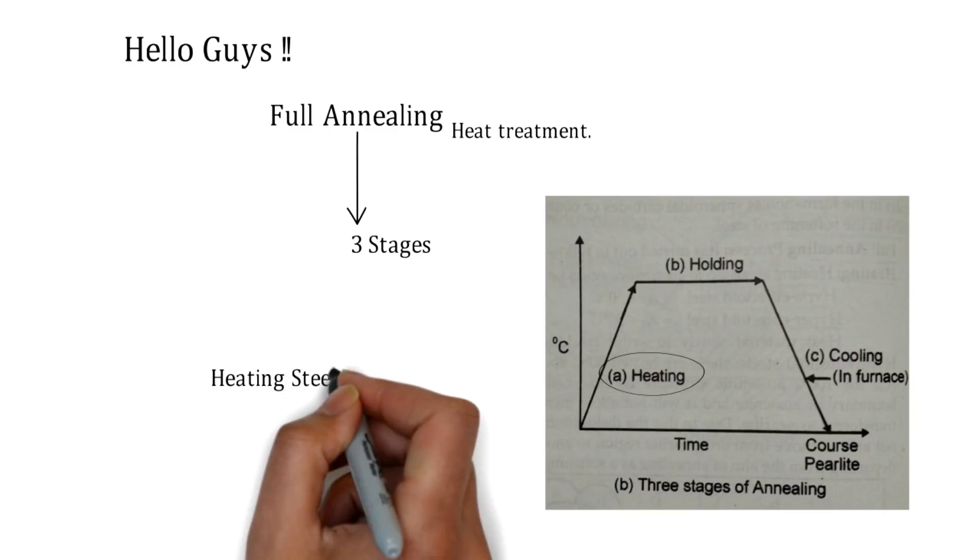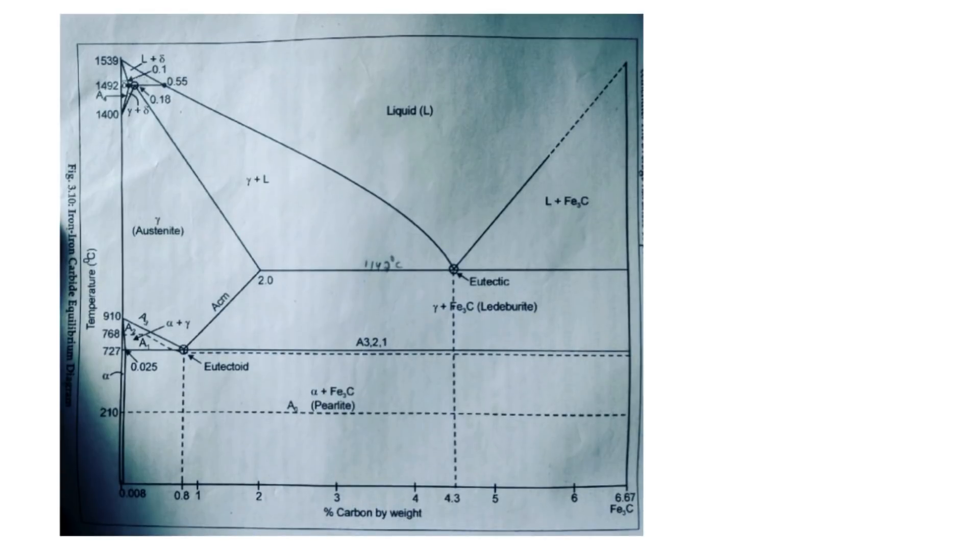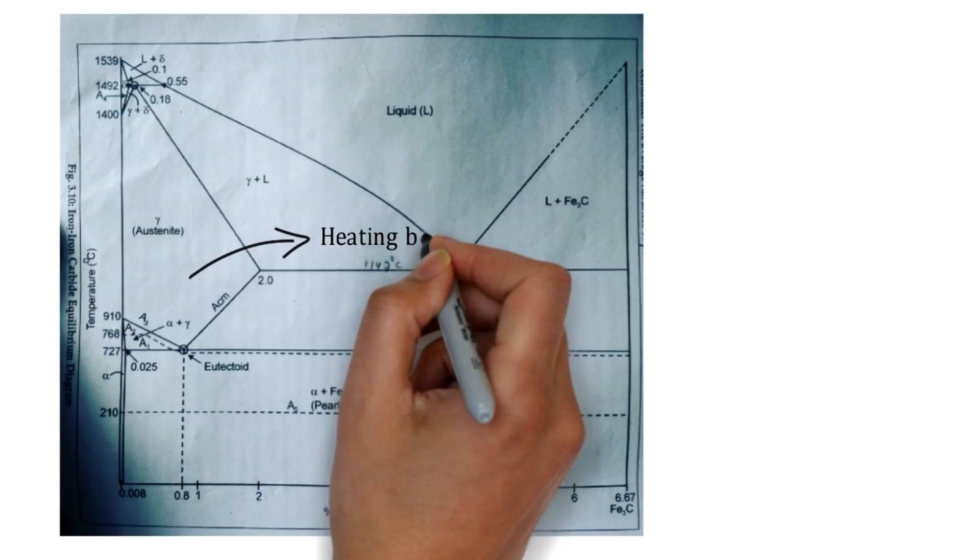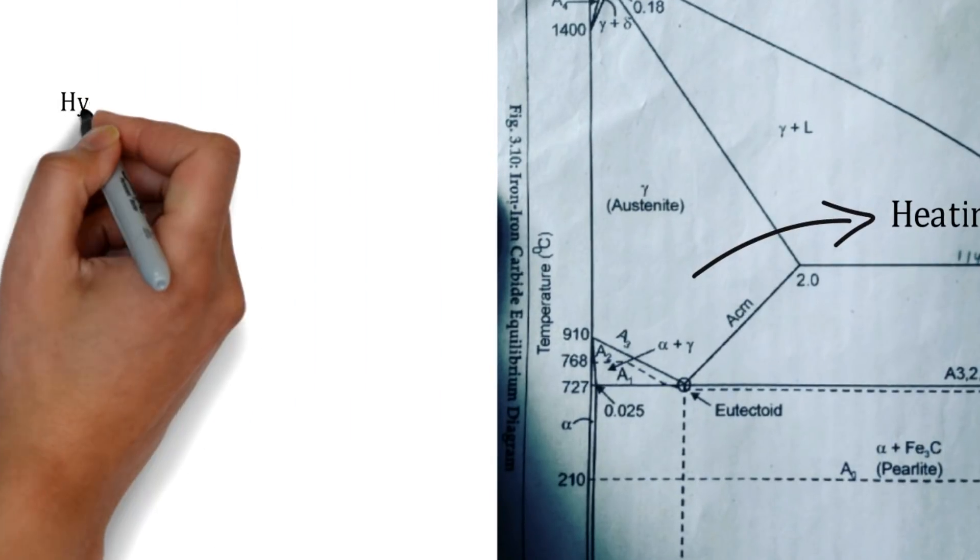In this particular heating process, the steels are heated up to the austenitic region, which is shown over here in the iron carbide equilibrium diagram. Over here we have gamma, that is the austenitic region, so heating of the steels just below this region.